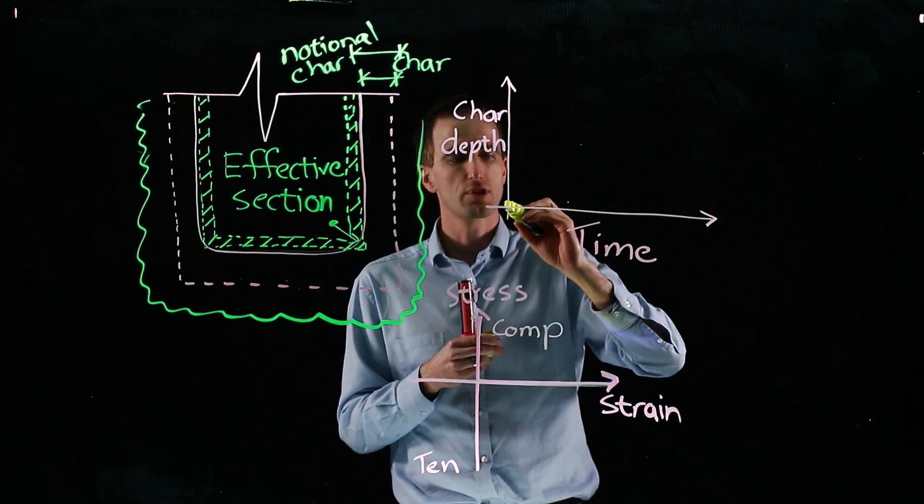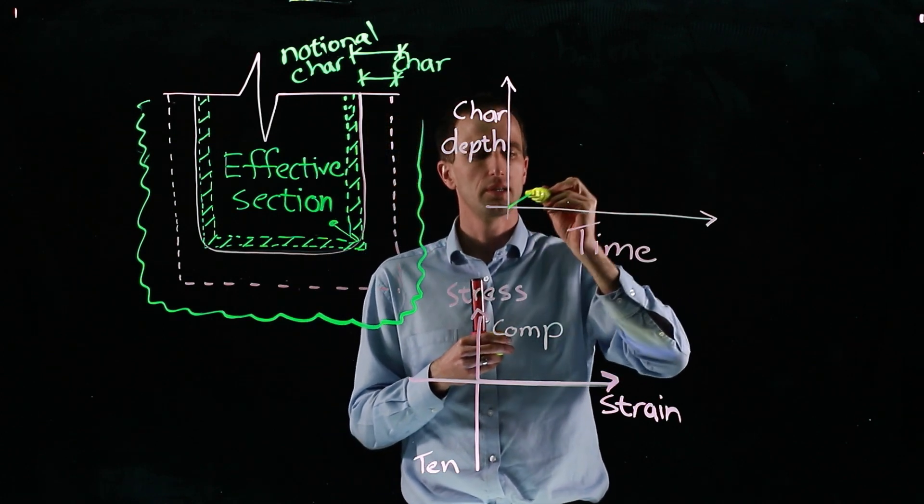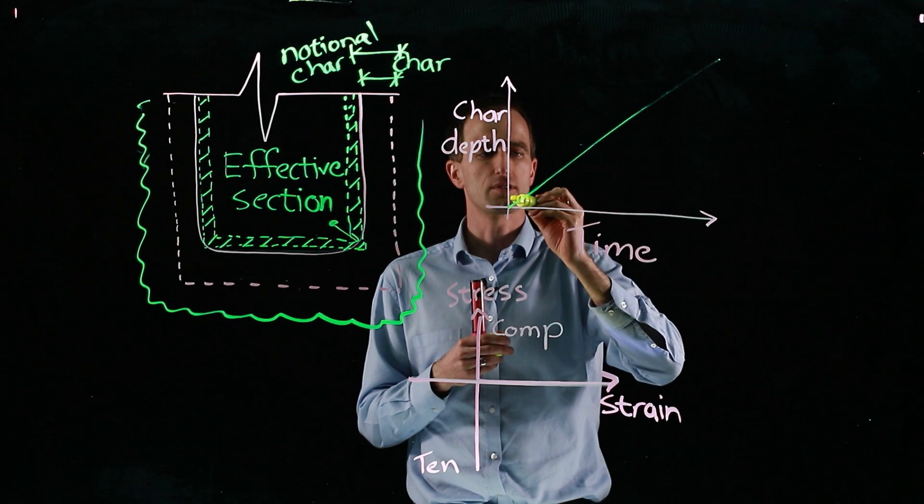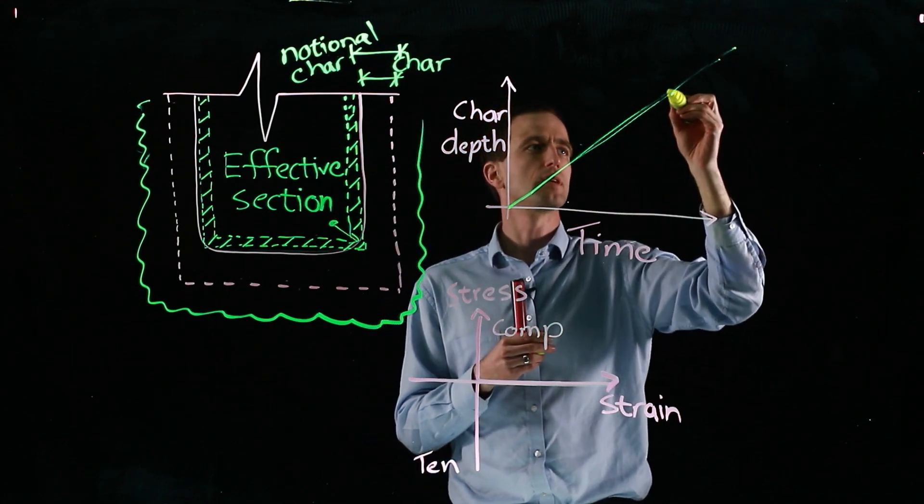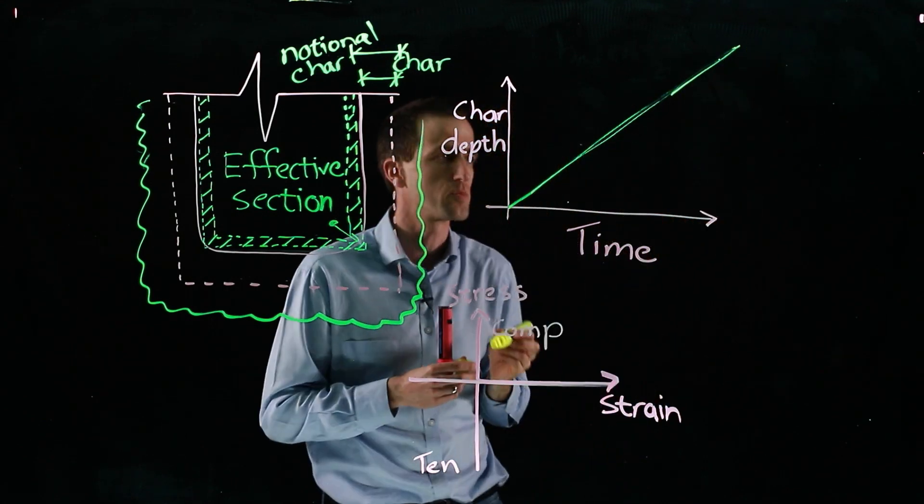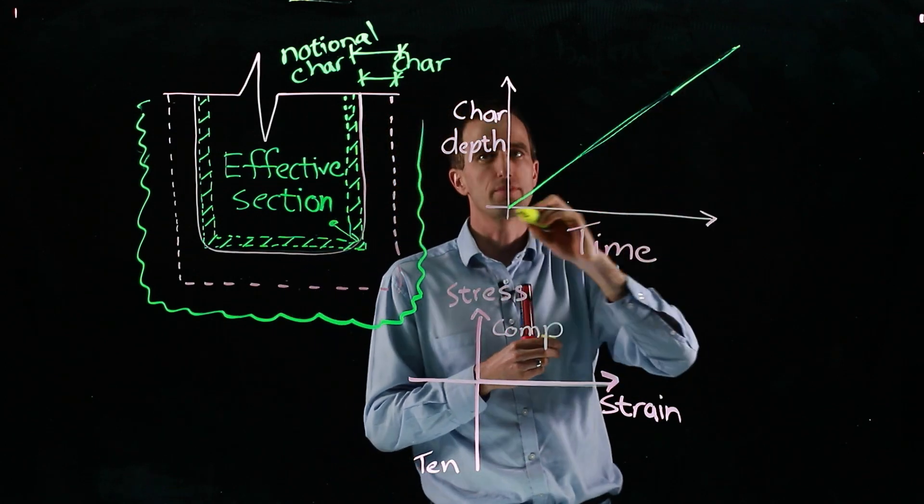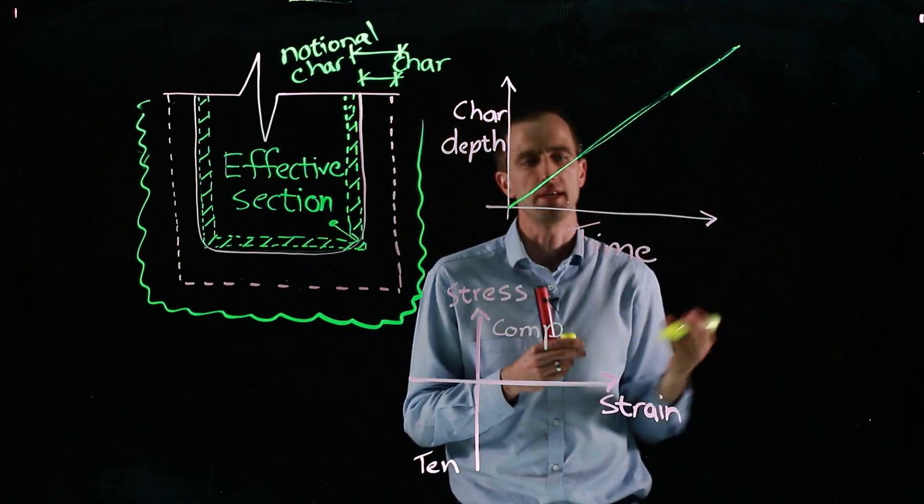And if I just have straightforward charring unprotected timber, it'll look something like that approximately. It's just a straight line depending on which model you use. As time progresses, the char depth linearly increases.